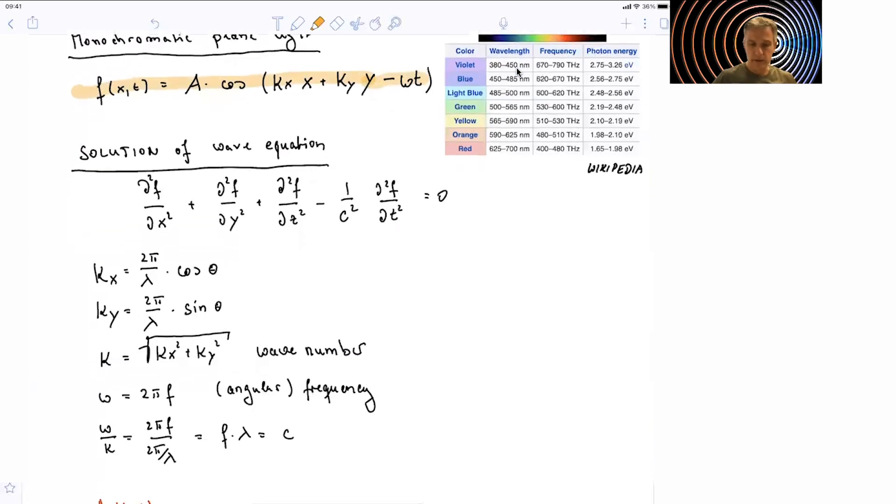So the wave is characterized by wave numbers in x direction and y direction. The square root of the squared sum is the wave number. The frequency omega equals 2πf, where f is the frequency and omega is the angular frequency. If you divide the angular frequency by the wave number, we get the speed of light. Similarly, we can multiply the frequency and the wavelength.